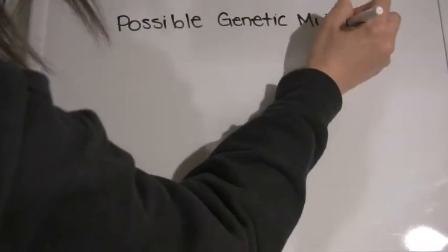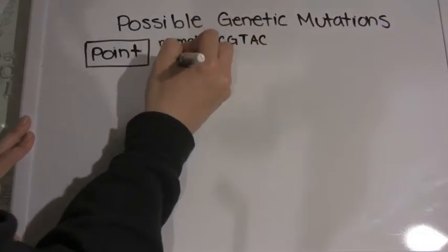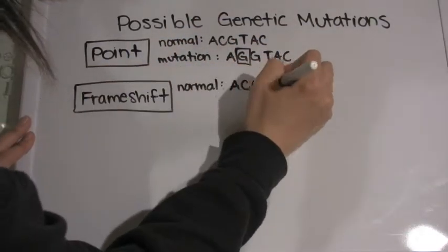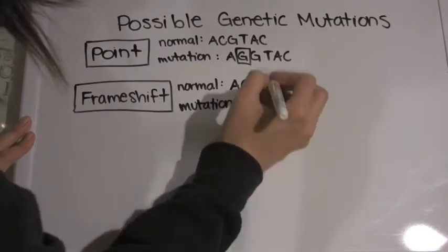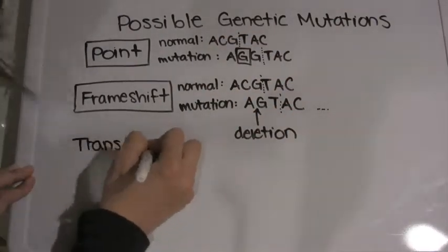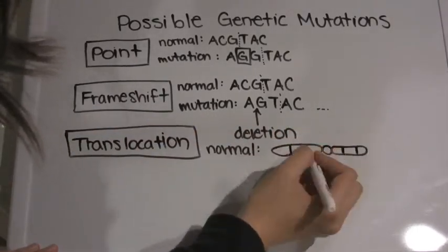There are also other ways in which one could be colorblind. A point mutation could code for a stop codon, thus creating a truncated protein. A frameshift could create a non-functional protein, or parts of a chromosome, and this is a chromosomal mutation, could be translocated. All this leads up to either faulty cones or no cones at all.